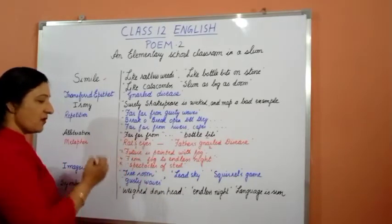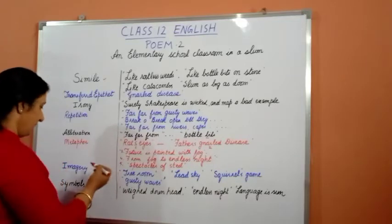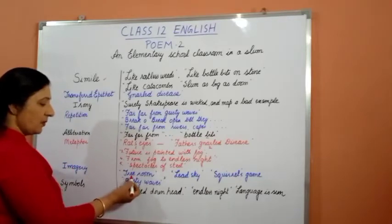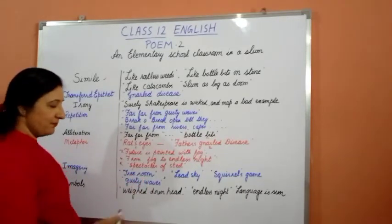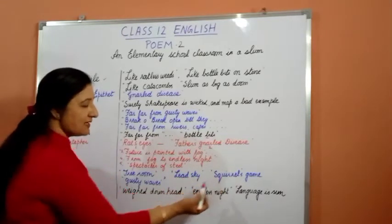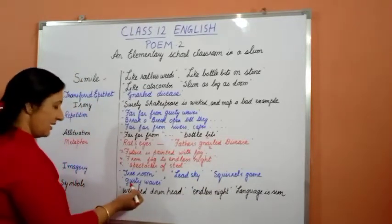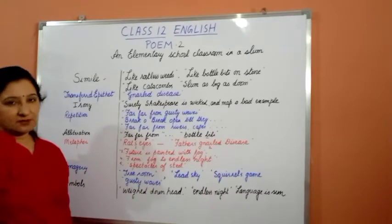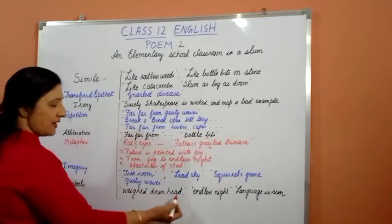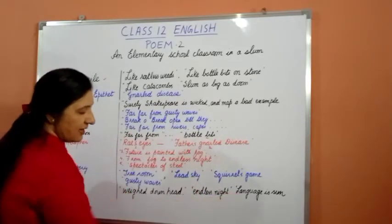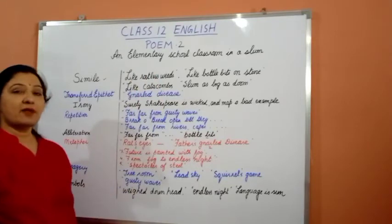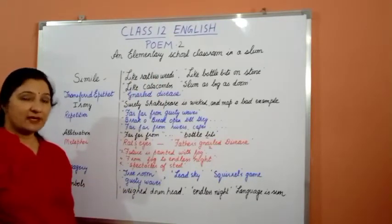Imagery is used by Spender in expressions like 'tree room', 'lead sky', 'squirrel's game', and 'gusty waves'. Symbols are used in 'weighed-down head', 'endless night', and 'language is sun'. We can see that this poem abounds in poetic devices.